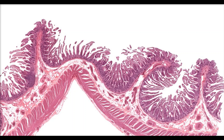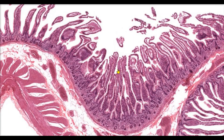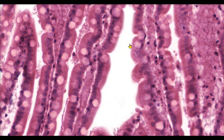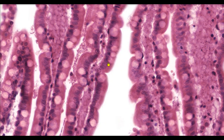Let's zoom in so we can get a better look at the cells that line this organ. As we zoom in, we can see our simple columnar epithelium. The cells are tall and rectangular in shape, and if we look at the darkly staining nuclei, we can see that they form a nice single row — one layer of epithelium on each side. These very tall cells form a nice barrier that helps prevent any pathogens, things like bacteria, from moving into the body, but they also provide a lot of surface area for absorption and secretion.